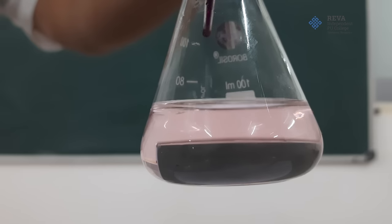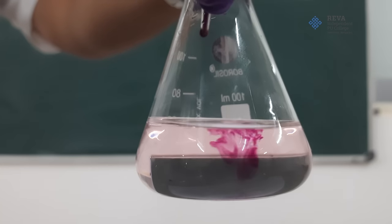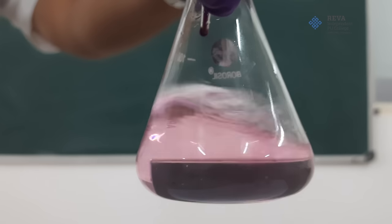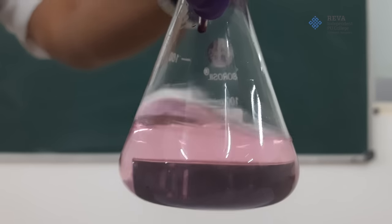In this titration, potassium permanganate solution of unknown concentration is titrated against a standard solution of ferrous ammonium sulphate, which is 0.1 molar.